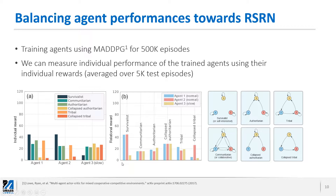On the right-hand side, you see the relational rewards, which show the social performance of each agent. In the survivalist scenario, agent three is doing poorly because it's slower and unable to reach the landmark. In a communitarian society, all agents receive the same exact shared reward, so the social performance of all agents is equal. In collapsed authoritarian, all agents care about one particular agent. In a collapsed tribal situation, agent number two receives a high amount of relational rewards because it's effectively helping agent number three, which is slower.